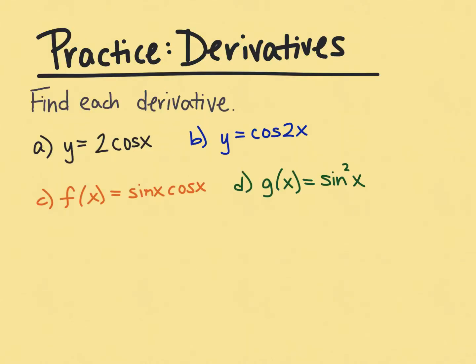Here are the first set of practice problems — we are going to practice simply finding derivatives. After this we will go into integrals. For part a, the two out front stays there and the derivative of cosine is negative sine, so it'll be negative two sine of x. We don't have to use the chain rule here because our inside function is just x.